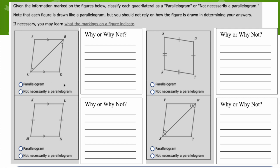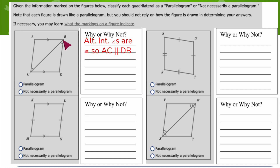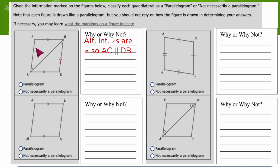In the first example, the top and the bottom are marked as parallel — those little arrows mean parallel. We also have alternate interior angles that are congruent: angle B on one side up top and a corresponding angle down below. Since alternate interior angles are congruent, the transversal line connects parallel lines, so AC is parallel to DB. The top and bottom are parallel, and the left and right are parallel, giving two pairs of opposite parallel sides. So this is a parallelogram.